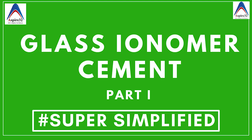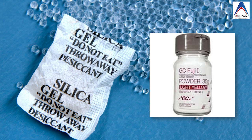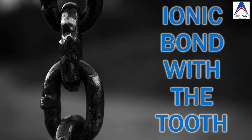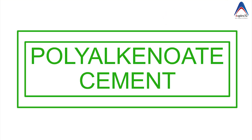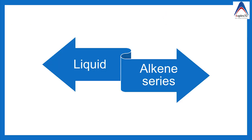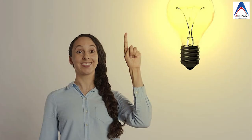Why the name glass ionomer cement? Very simple — the 'glass' indicates that the powder has silica, and the bond which the cement has with the tooth structure is ionic. That's why it is called glass ionomer. It is also called polyalkenoate cement because the liquid belongs to the series of alkenes — for example, it has acrylic acid and tartaric acid, all belonging to the alkene group. It is also called manmade dentine, and when we discuss the properties you will understand why.